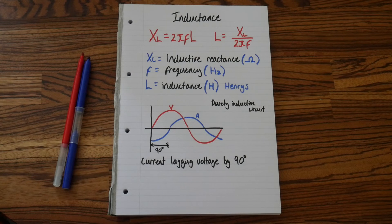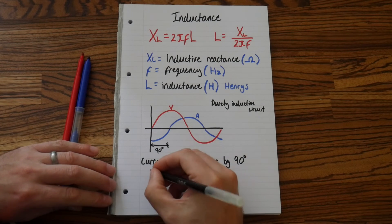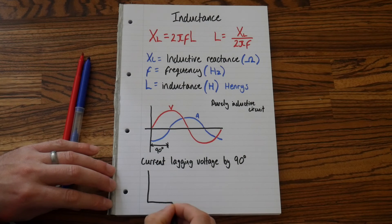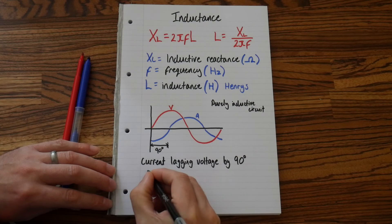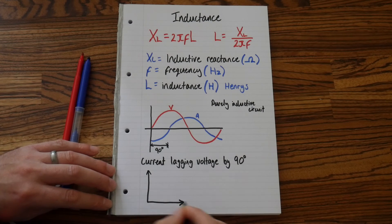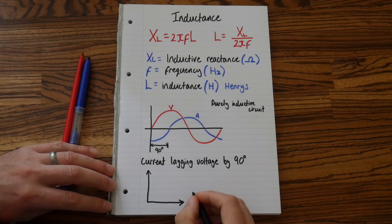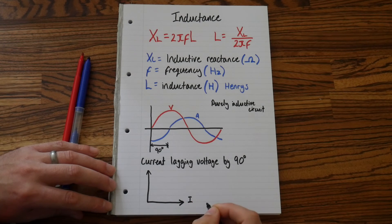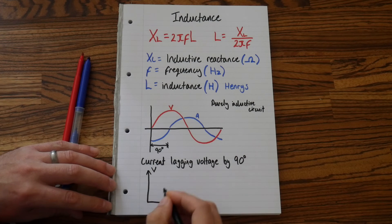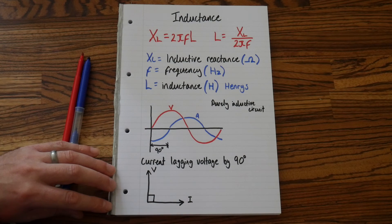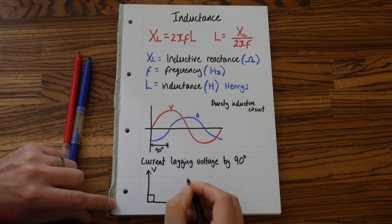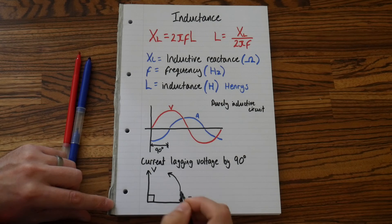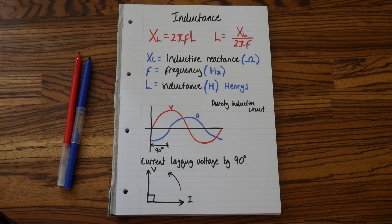The phasor diagram that we would draw would look like this. So always have current is horizontal. This is current, this is volts. That shows my 90 degree, and the direction of rotation is always anticlockwise. This is a phasor diagram.